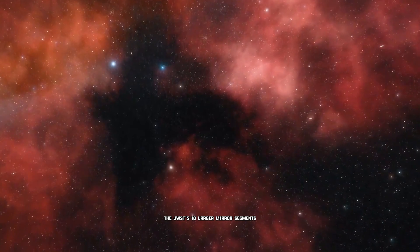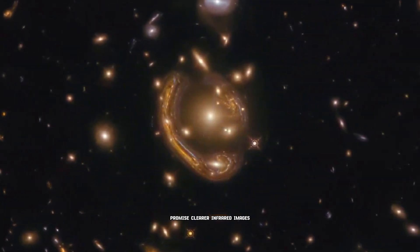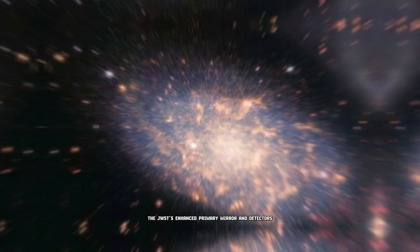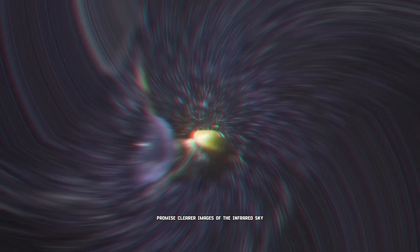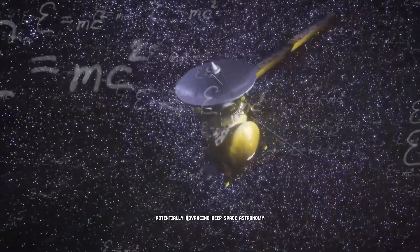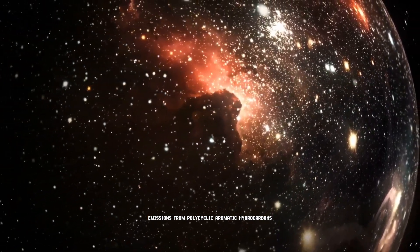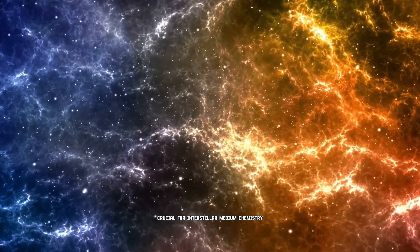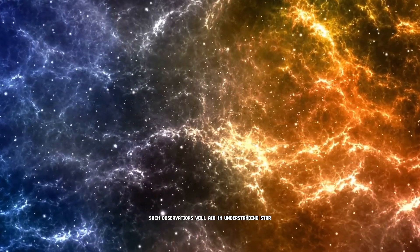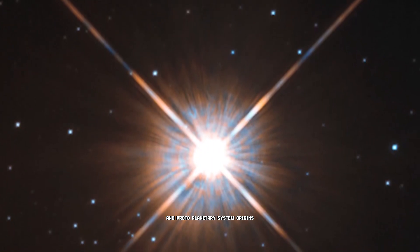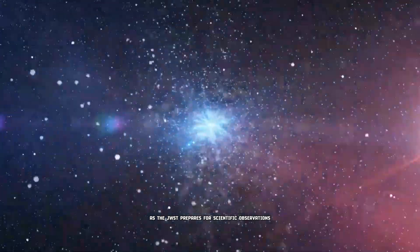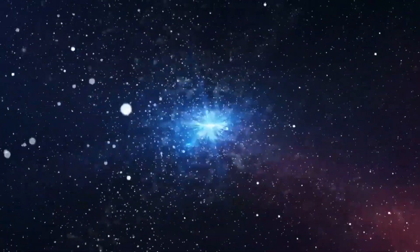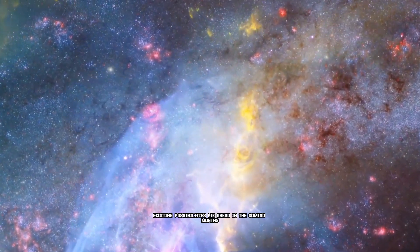The JWST's 18 larger mirror segments promise clearer infrared images. The JWST's enhanced primary mirror and detectors promise clearer images of the infrared sky, potentially advancing deep space astronomy. The image shows emissions from polycyclic aromatic hydrocarbons, crucial for interstellar medium chemistry. Such observations will aid in understanding star and protoplanetary system origins. As the JWST prepares for scientific observations, significant progress has been made. Exciting possibilities lie ahead in the coming months, years, and decades.